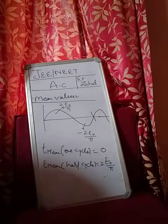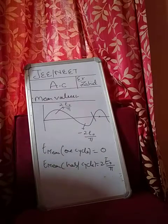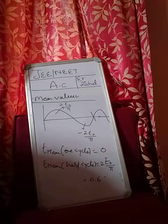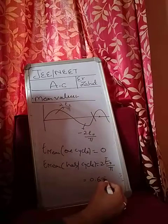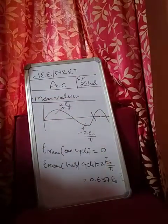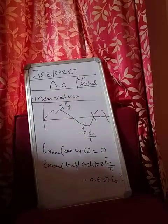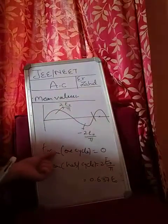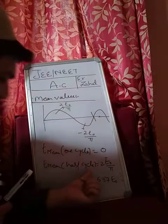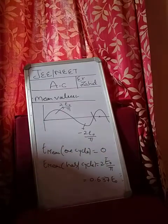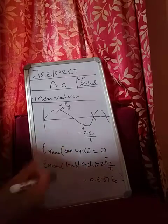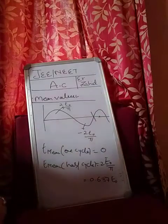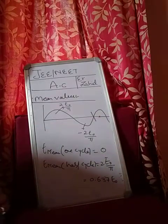Twice E naught by pi, and twice E naught by pi is approximately equal to, or you can remember the value as 0.637 times E naught. Same for current, twice I naught by pi. This is the mean value. So for mean value, remember it is only defined for half of the cycle. If you calculate mean value for the whole cycle, it will be zero. This is why we do not use ordinary ammeter and voltmeter for AC. To measure AC, a different instrument is used, which is called hot wire instrument.